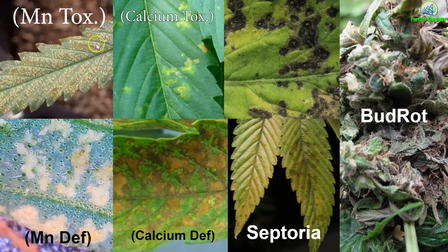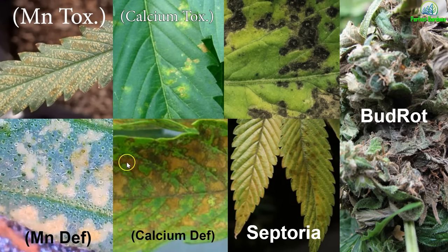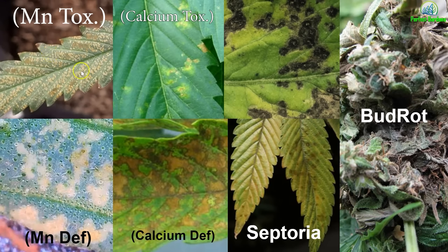Now we're doing a side-by-side comparison — this is where it really starts to pop out. You can see the little splotchy dots, just like what we were referencing before: spots and paleness. You can see the paleness right here. But the calcium one is darker and more splotchy, really taking up the whole section of the leaf — it's not little dots in the same sense.